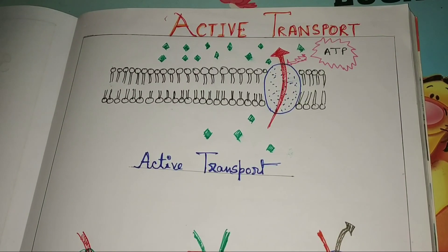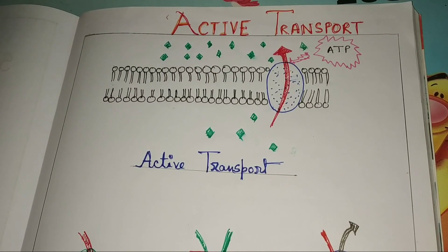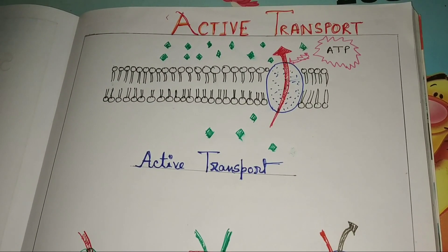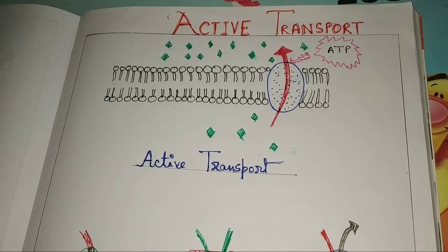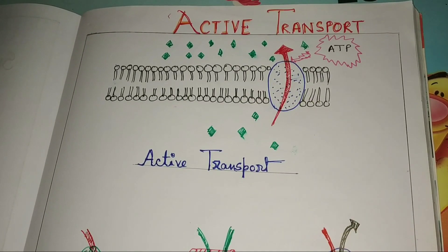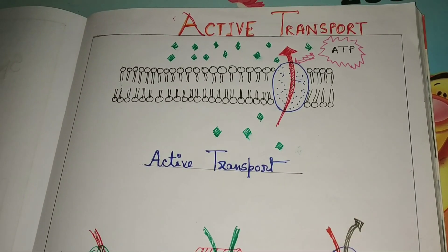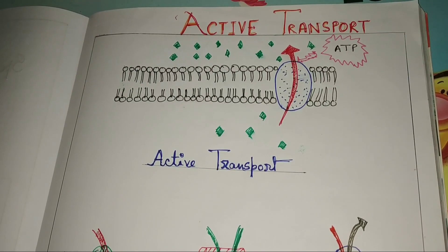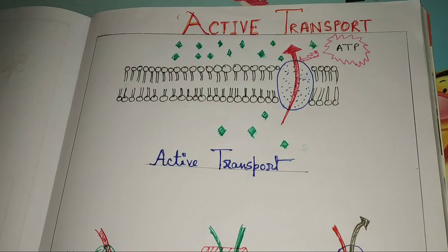Hello friend, welcome to Tania's Biology. Today my topic is about active transport. In my previous class I already described about the membrane transport system. This membrane transport system is divided into two types: one is active transport and another one is passive transport. Today I will briefly describe about active transport.